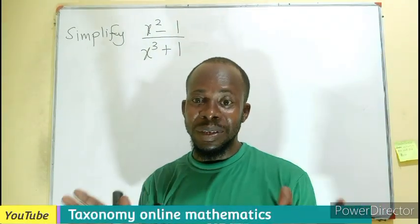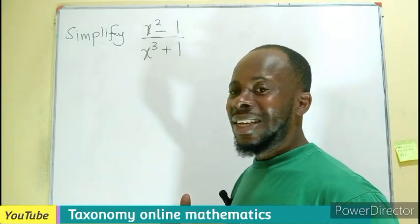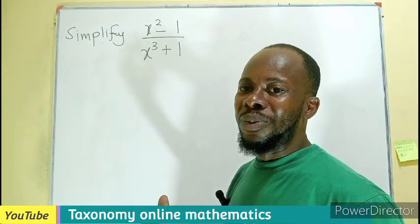Let's simplify this question. This is an algebraic fraction. We have to simplify x squared minus 1 divided by x cubed plus 1.